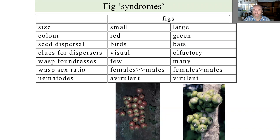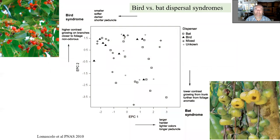There are basically two morphological types of figs: small red ones and large green ones. The small red cherry-like ones are typically dispersed by birds orienting visually. Because they are small, they typically have few foundresses entering them, which means a highly biased female sex ratio and avirulent nematodes. Large green figs attract bats olfactorily, have typically many foundresses, less biased sex ratio, and virulent nematodes as a consequence.